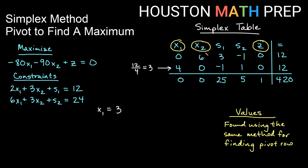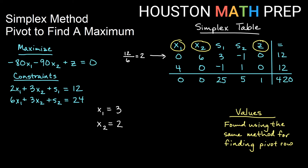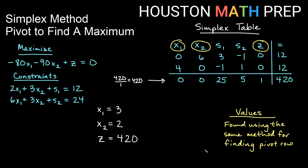Looking at the x2 column, the only non-zero entry is 6 in the top row. I take the equal column entry divided by 6: 12 divided by 6 gives 2. So x2 equals 2. For z, the only entry in the z column is a 1 at the bottom. I take the equal column entry divided by 1: 420 divided by 1 gives 420. So z equals 420, which is our maximum from the problem.